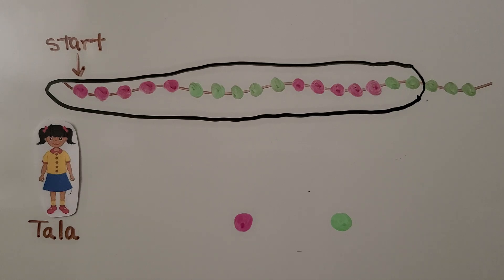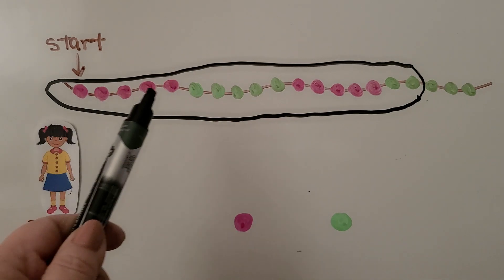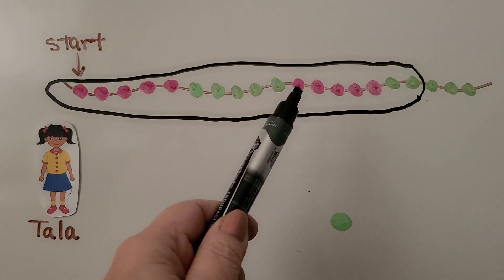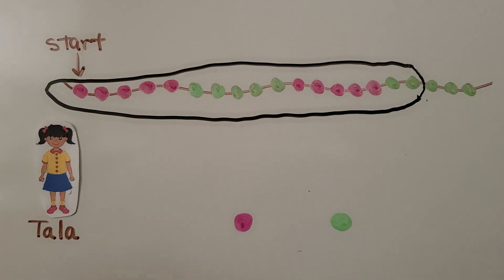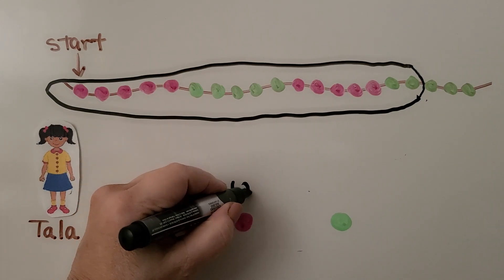Are there more pink beads in our circle or green beads? Do you think there are more pink ones or green ones? I see 5 pink, 6, 7, 8, 9. I see 10 pink. There's 10 of the pink ones.